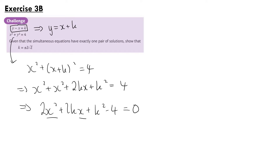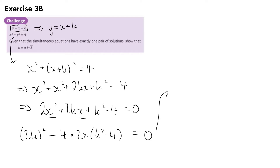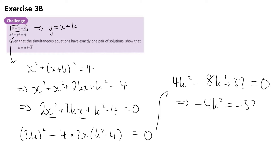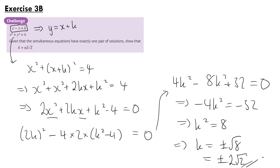If it has exactly one pair of solutions then the discriminant of this quadratic in x equals 0. So b squared minus 4ac: (2k)² minus 4 times 2 times (k² minus 4) equals 0. Expanding: 4k² minus 8k² plus 32 equals 0, so minus 4k² equals minus 32, therefore k² equals 8, and k equals plus or minus root 8, which is plus or minus 2 root 2. That is our final answer.